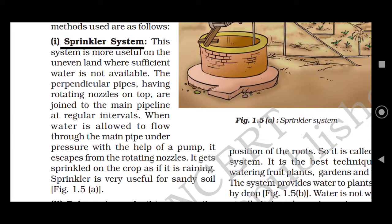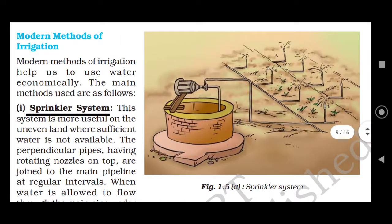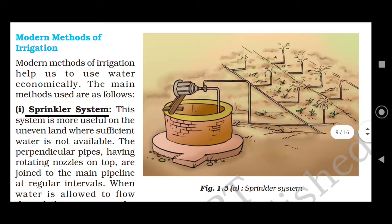For example, in Rajasthan where water is scarce, the sprinkler system is used. The sprinkler works just like this, distributing water over crops that require less water.